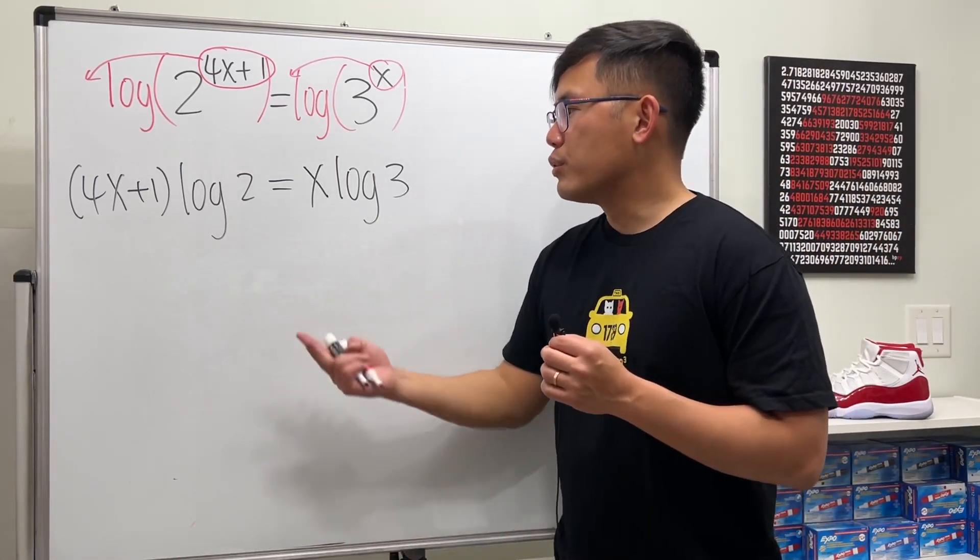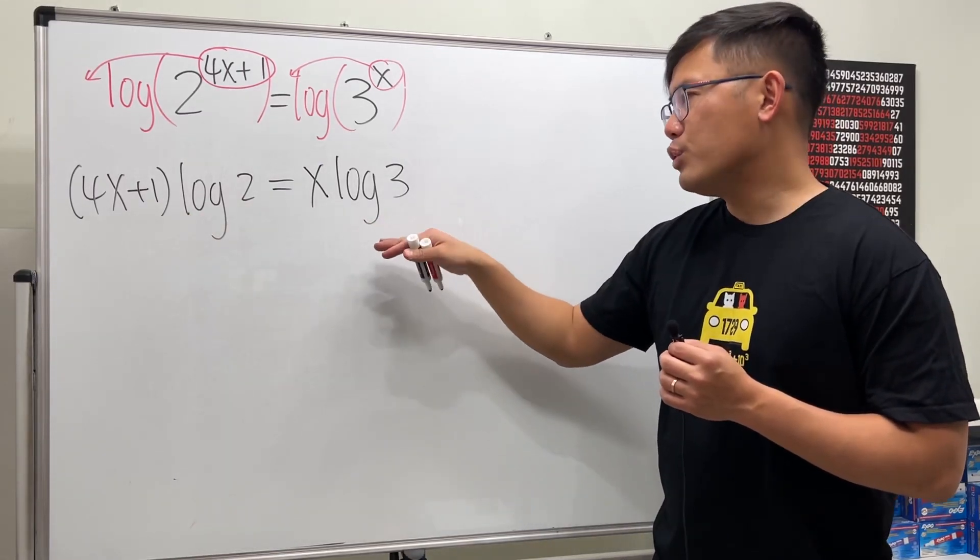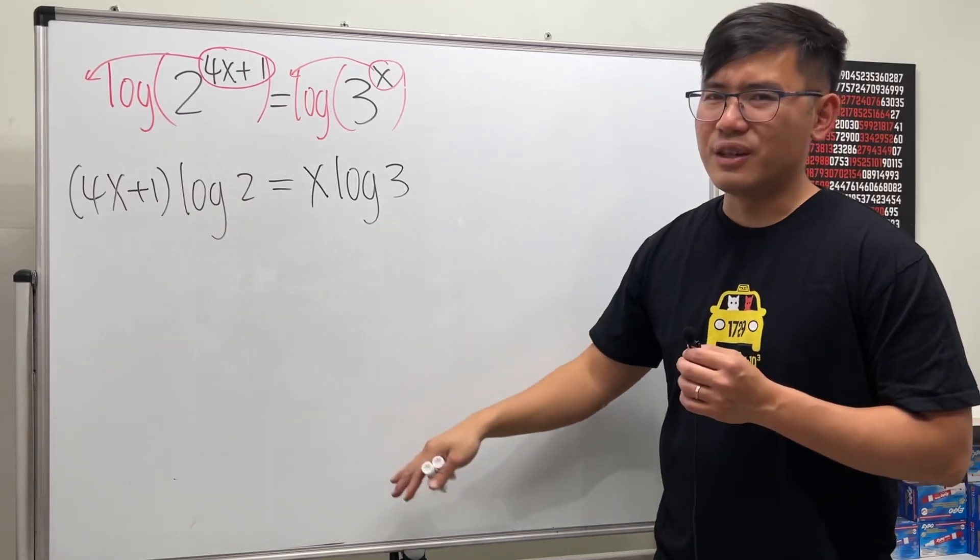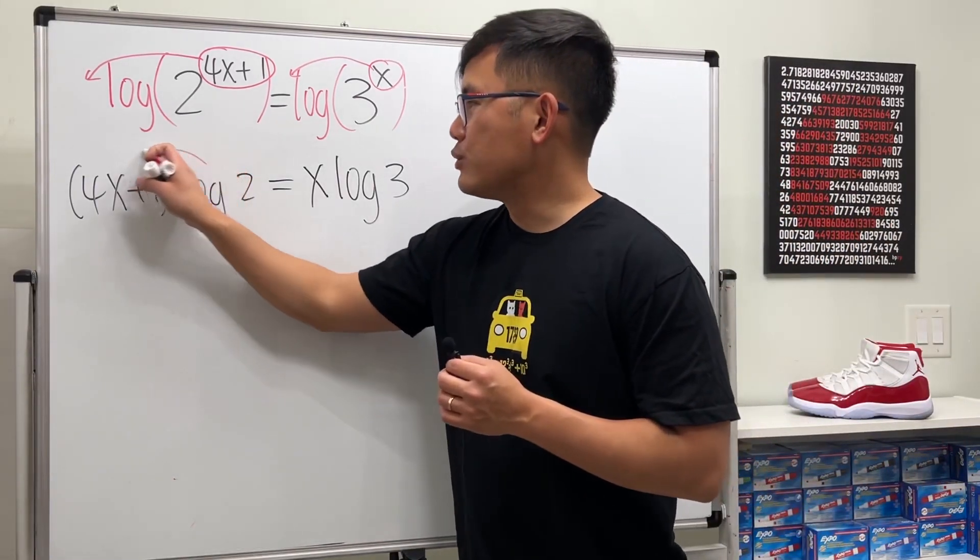Next, you have two choices. One, you can divide the log of 2 on both sides. But you will begin with fractions from here down. So maybe not so good. So let's just go ahead and distribute.